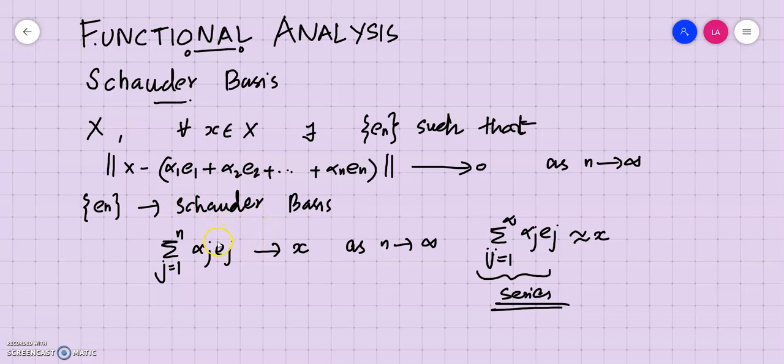In the case of infinite-dimensional spaces, the usual definition of basis is not enough to characterize the space in general. But the Schauder basis, which consists of infinitely many elements, can be used to study infinite-dimensional spaces. Most of our normed spaces are infinite-dimensional, so we need some extension of basis which helps in studying infinite-dimensional normed spaces. That is why we define the Schauder basis.